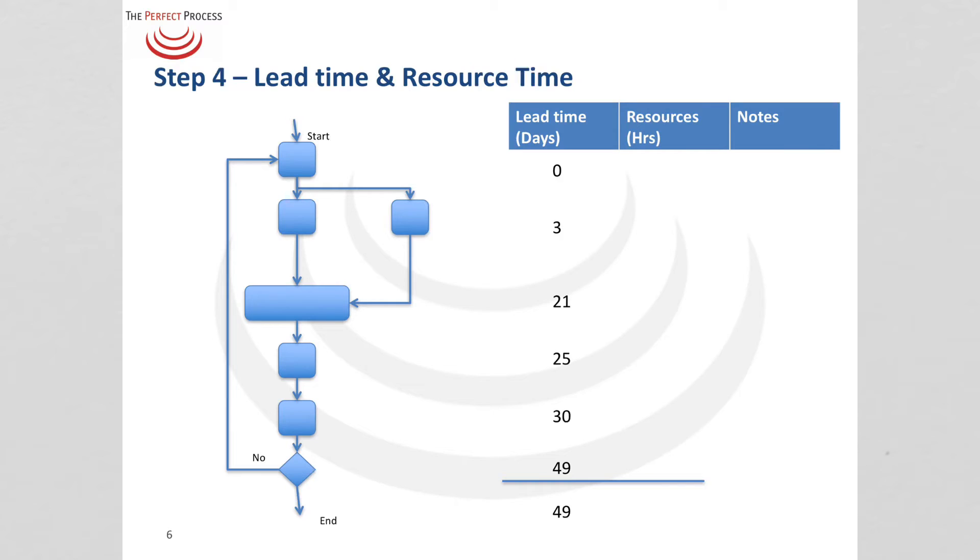The next thing for us to look at is the resources column and what we have to do here is work out how much time is spent doing each activity and we look at this in hours as that's a more appropriate unit for the amount of time spent in business process on an activity.